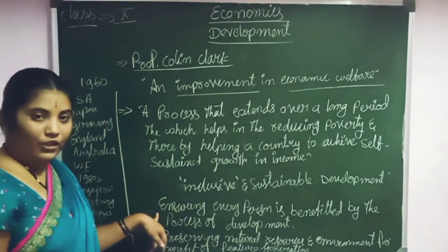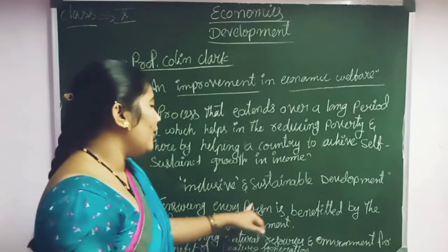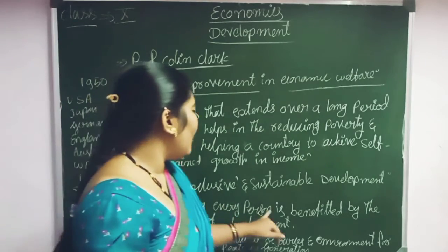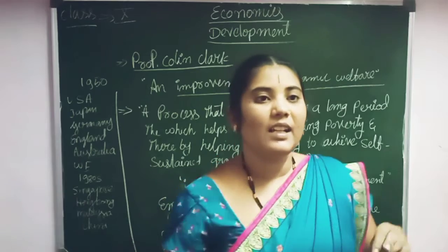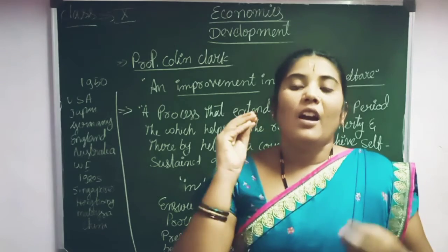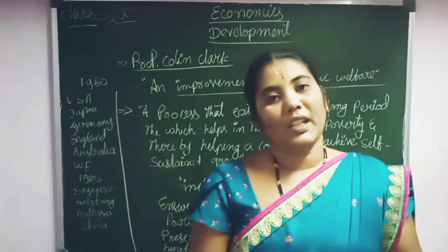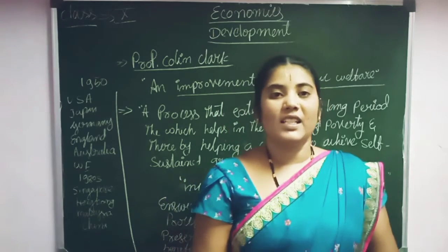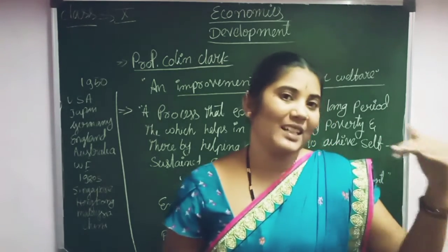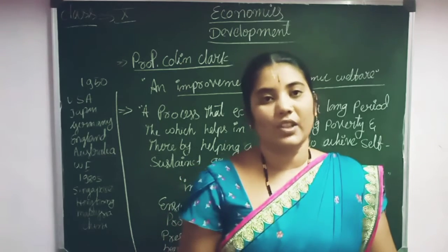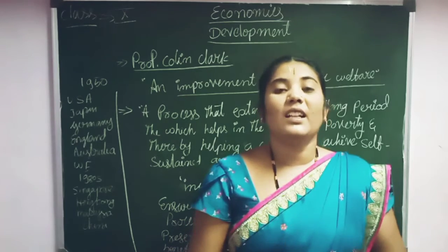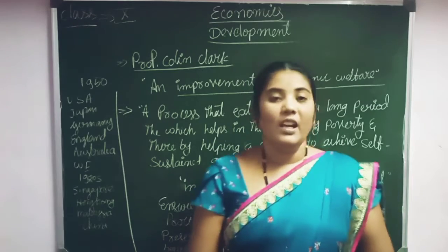The definition of inclusive development is: ensuring every person is benefited by the process of development. Including all peoples in the process of development is called inclusive growth. The wealth should be distributed equally throughout the country among all peoples. If only a few people have high per capita income, that is not considered a developed country. Because of inclusive growth, all people should have sufficient per capita income and not face any problems — only then is that country considered a developed country.